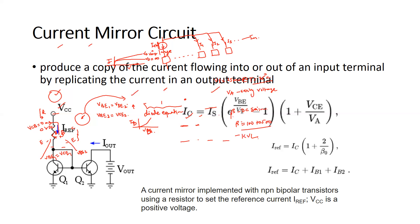The current mirror is often used to provide bias currents as shown, and is also used as an active load in amplifier stages — we'll explore that later. Thank you.